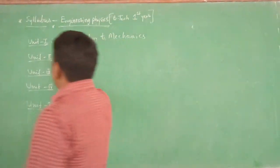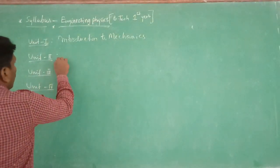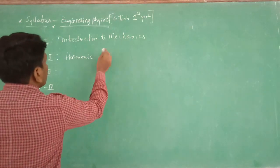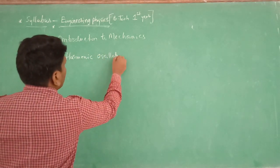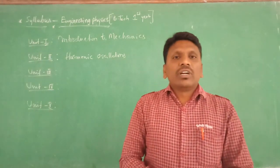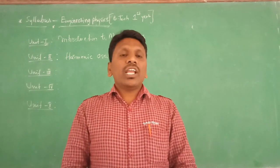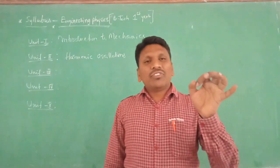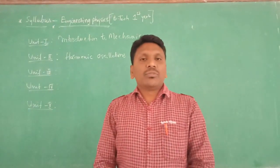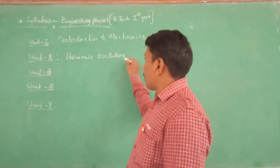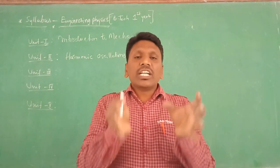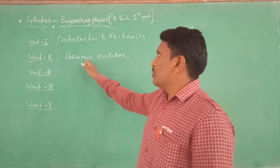Unit two is Harmonic Oscillations. What is harmonic oscillation? What is damped harmonic oscillation? What are the types of harmonic oscillations? We will study oscillations in detail, including vector notation, complex notation of vectors, and the phase diagram for harmonic oscillations.